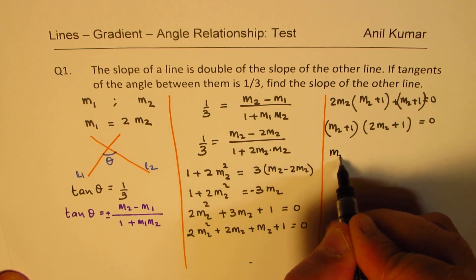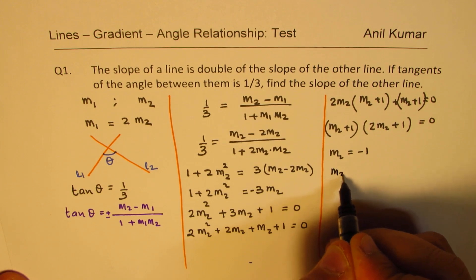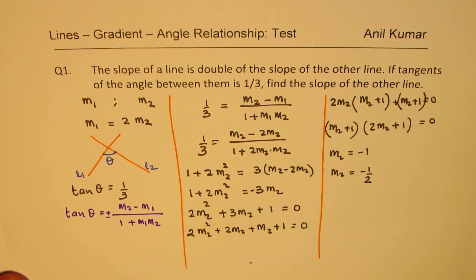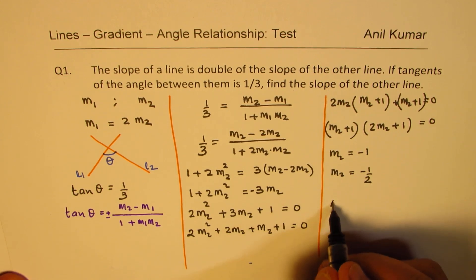Now, if I have to make this 0, that means what? That means m2 equals to minus 1 or m2 equals to minus half. So, these are the two possible values for m2. So, that becomes our answer.